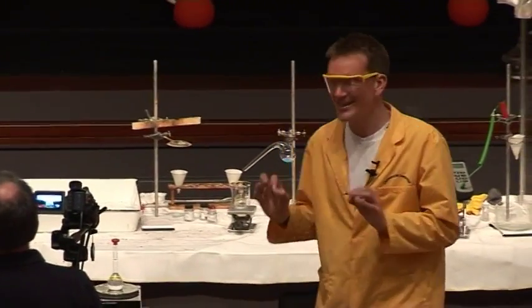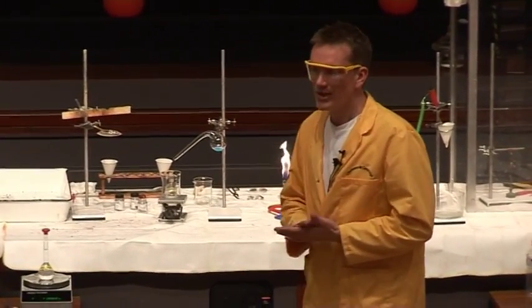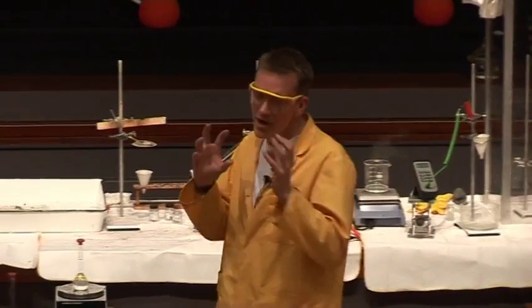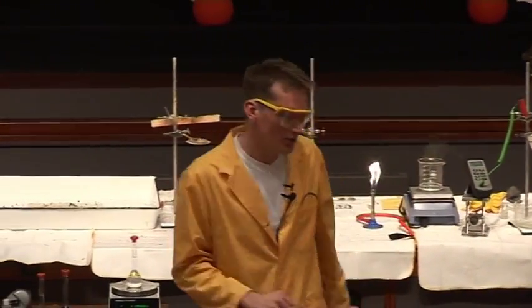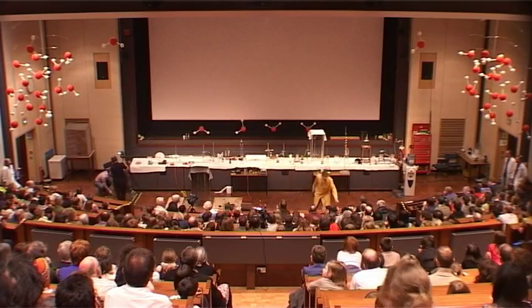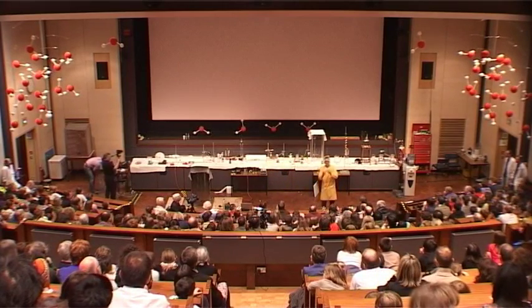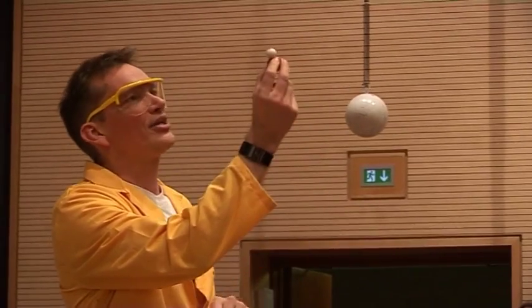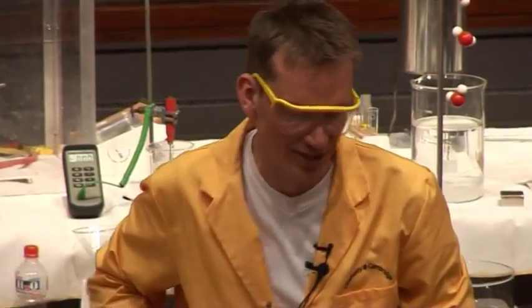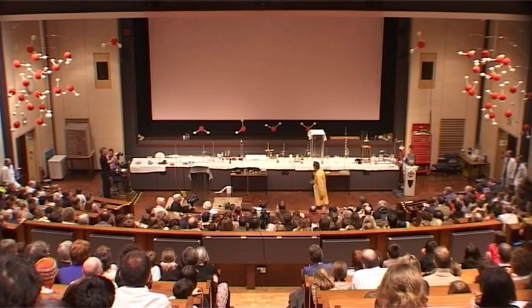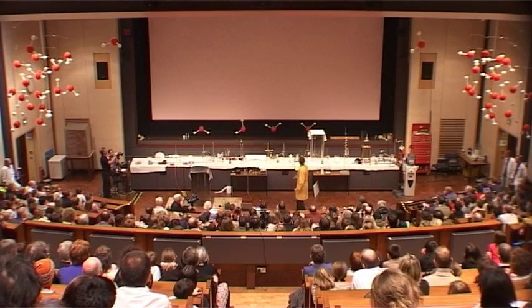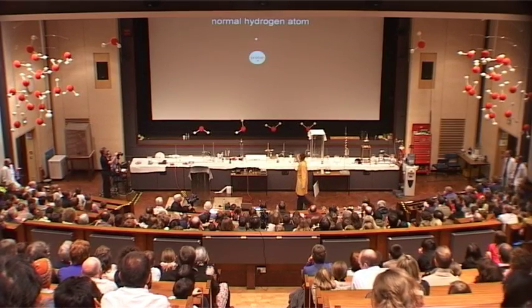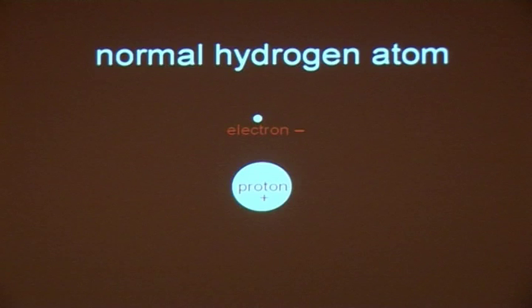Now what exactly is heavy water? Well, in order to understand this, we need to look right into the heart of a hydrogen atom. Remember that water is made up of one oxygen and two hydrogen atoms, but we need to look inside this to see what a hydrogen atom actually looks like. If we looked inside, we would see the atom itself — this is a normal hydrogen atom.